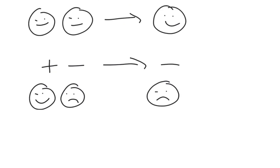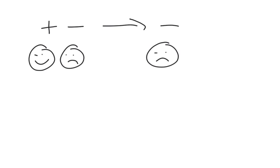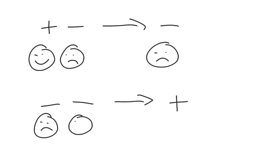In our last scenario, we have two negative signs beside each other — that actually simplifies into a positive sign. I like to remember it like this: when you have a sad person with a sad person, they're going to talk about how sad their lives are, and that ultimately makes both of them happy. Because when you complain with another person, you get things off your back and it makes you feel a little bit better.